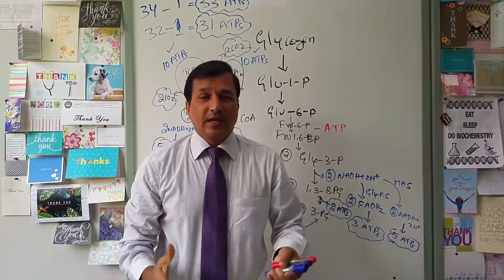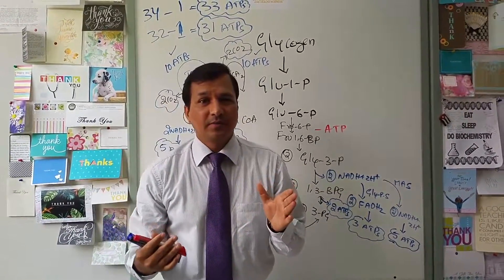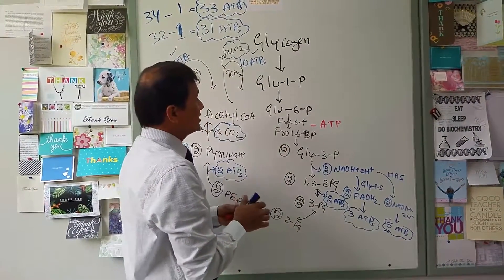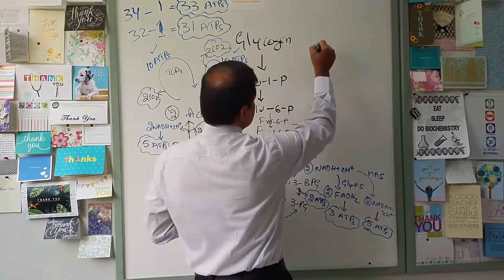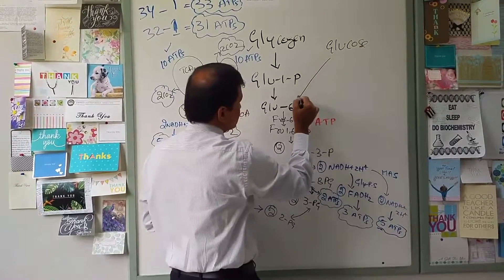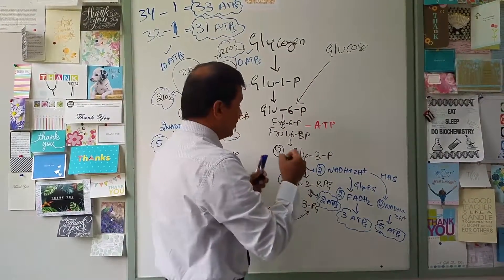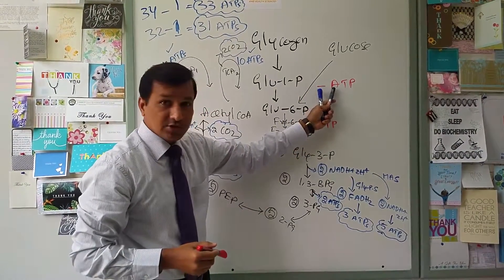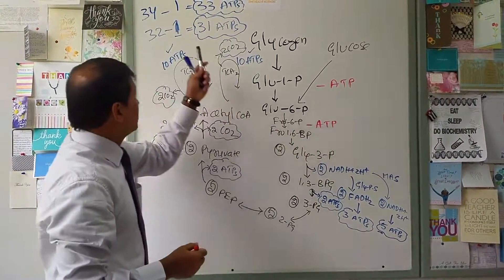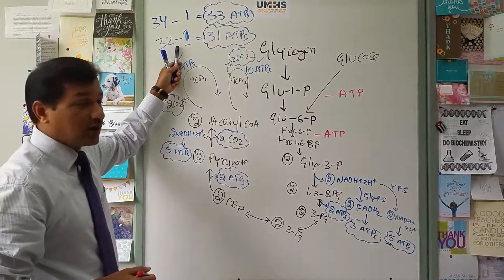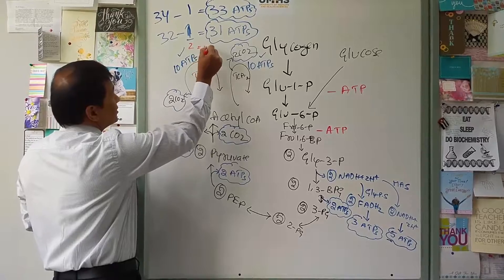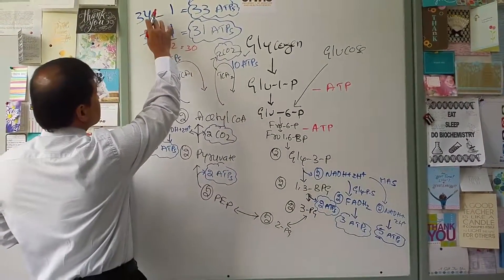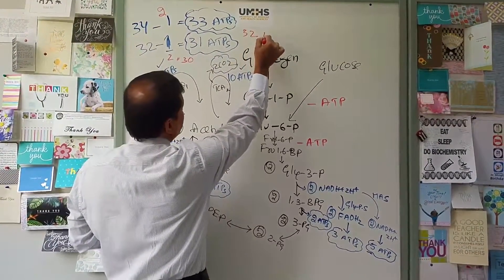This differs from the ATP gain when glucose (not glycogen) is the starting molecule. In glycolysis, converting free glucose to glucose-6-phosphate by hexokinase or glucokinase consumes 1 additional ATP. That means 2 ATPs total are consumed, so it becomes 32 minus 2 = 30 ATPs using the glycerol phosphate shuttle, or 32 ATPs using the malate-aspartate shuttle, for complete oxidation of free glucose.